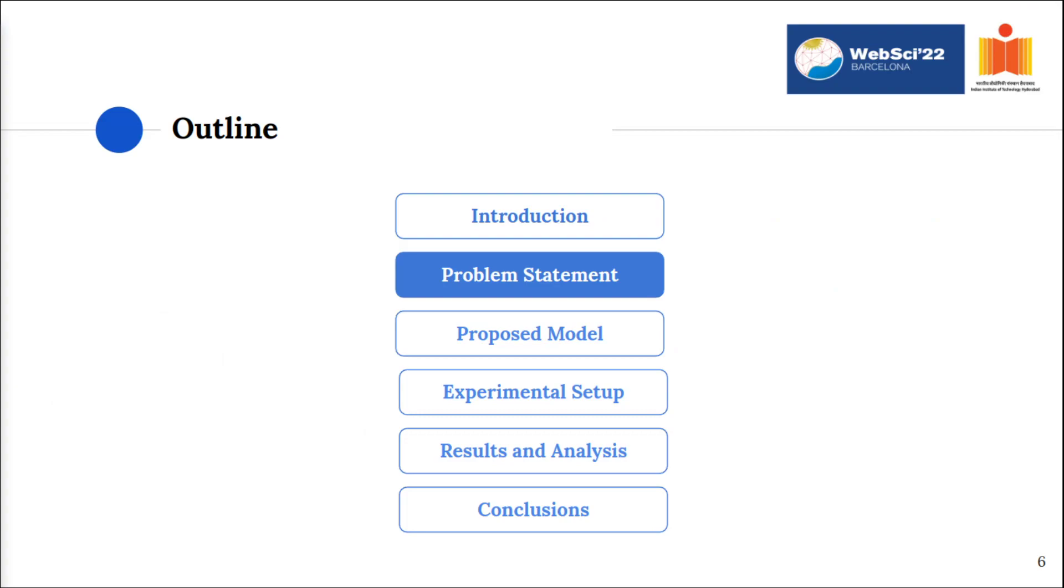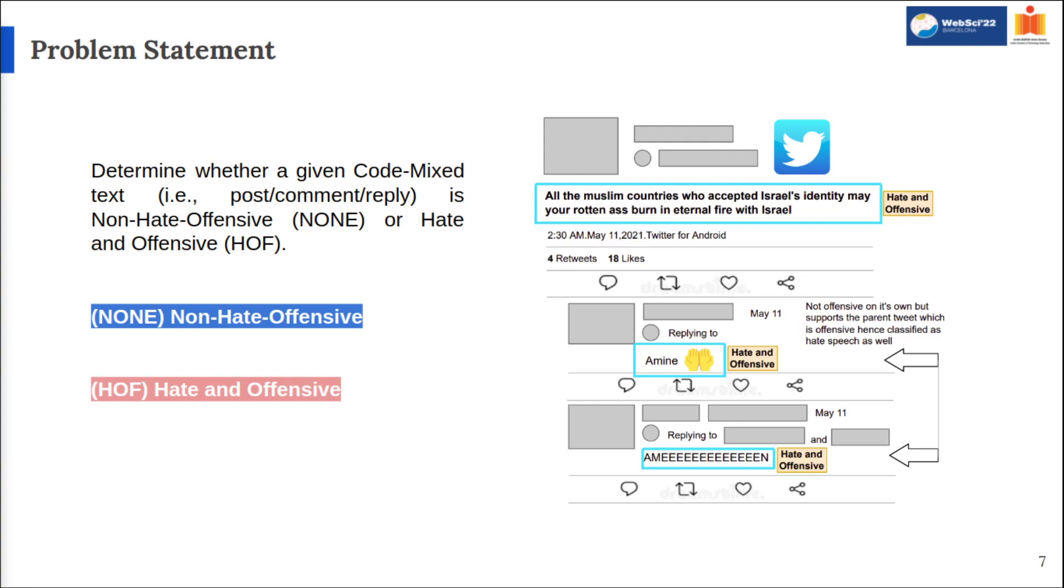n and k varies with a tweet and comments correspondingly. Now the problem statement is to determine whether a given Code Mixed Text, i.e. post or comment or reply, is non-hostile-offensive or hostile-offensive. But it is crucial to understand that the classification of a Code Mixed Text is more dependent on the previous context and not just on its own, as the text can be of positive sentiment stand-alone but might actually be in support of an offensive statement. For example, as we can see in the figure on the right, the comment or mine is itself not hostile-offensive but supports the tweet that is actually hostile-offensive. Hence, the comment should also be classified as hostile-offensive.